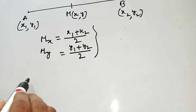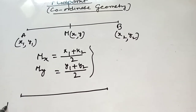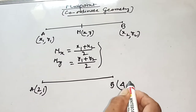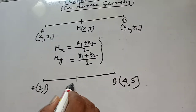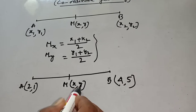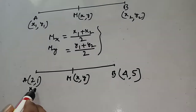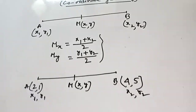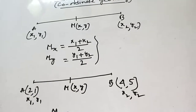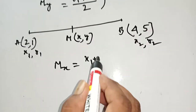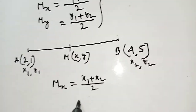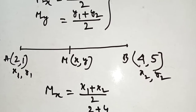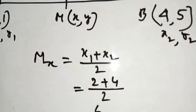Now one example. A is (2, 1) and B is (4, 5). Find the midpoint of AB. x1 is 2, y1 is 1, x2 is 4, y2 is 5. mx equals x1 plus x2 by 2. At first we write the formula: x1 plus x2 by 2. Here x1 means 2 plus x2 means 4, divided by 2, that means 6 by 2, this is 3.